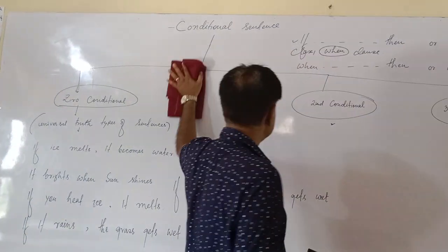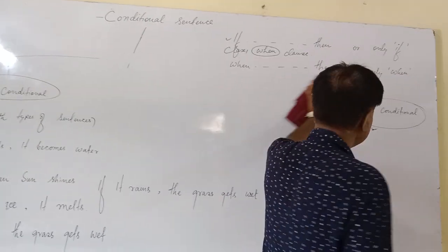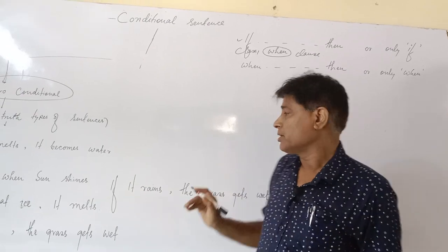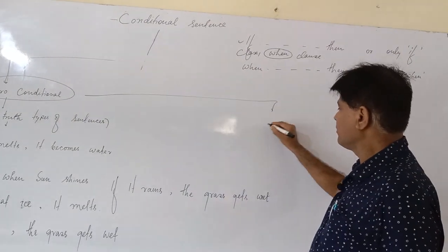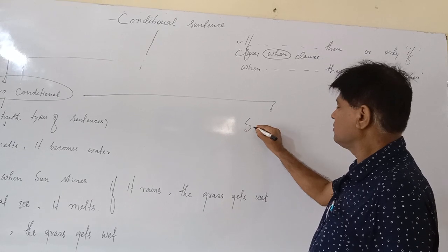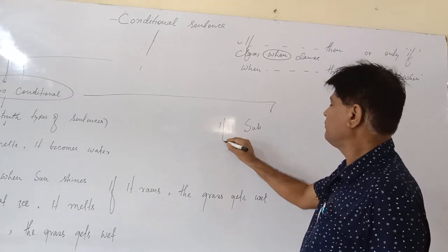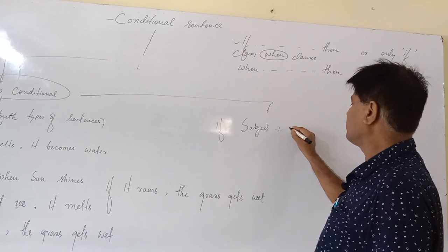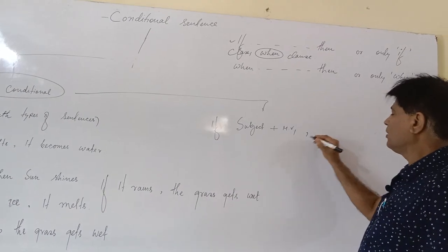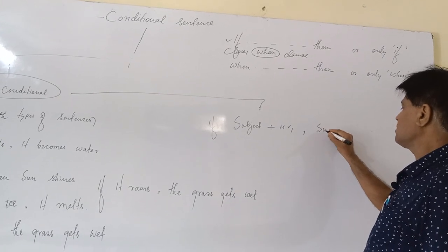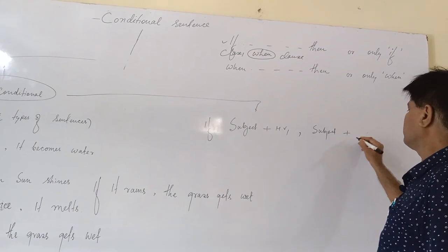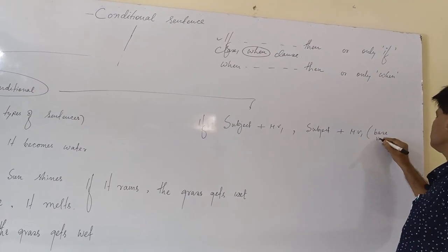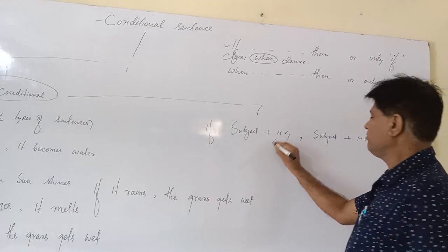Zero condition is used when you are making sentences with universal truth. The structure will be always in zero condition: if, subject, verb one, comma, subject, main verb one or base verb.